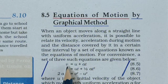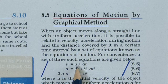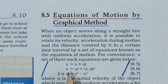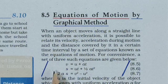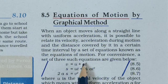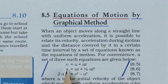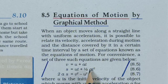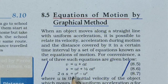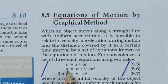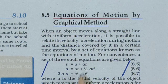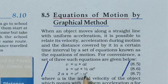There are five variables: final velocity, initial velocity, acceleration, time, and distance travelled. To find any of these, we can use v = u + at, or s = ut + ½at² to find distance travelled. When time is not given, you can use 2as = v² − u².